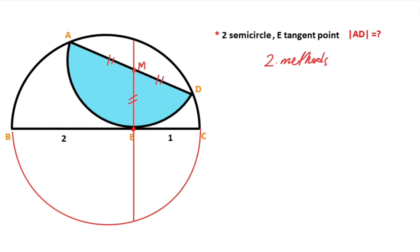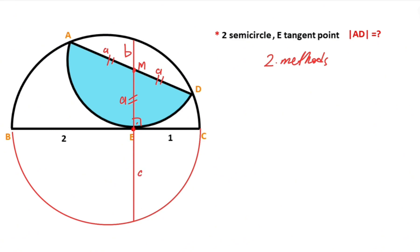This angle here is 90 degrees because of the tangent. I want to represent the radius of the blue semicircle as a, and let's call the other segment b. Notice that this length is also a plus b.